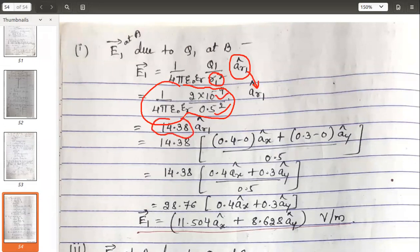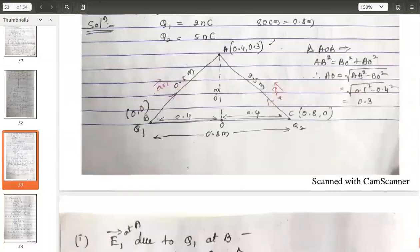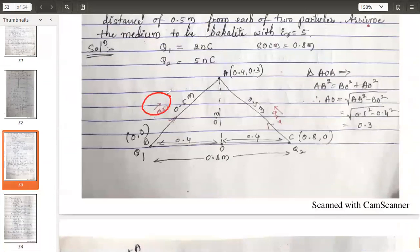Use the calculator. Charge substituted: two nanocoulombs. Distance squared, it comes up to 14.38 into ar1. Now let's see how to get this unit vector ar1. You can see the direction is like this because charge q1 is positive. So according to the convention, the flux lines diverge from the positive charge, coming out in this direction.